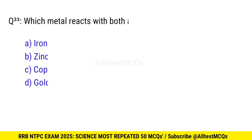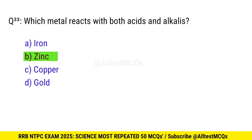Question 33. Which metal reacts with both acids and alkalies? Right option is B, zinc.